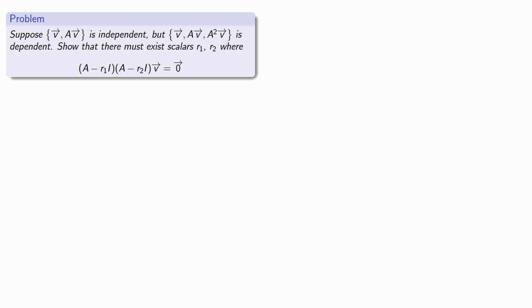Well, suppose we have an independent set v, Av, but if we add in the vector A²v, we get a dependent set. And let's show that there have to be scalars r1 and r2, where (A - r1I)(A - r2I) is equal to the 0 vector. Now this is quite a handful, so let's see if we can make this a little bit easier to understand.